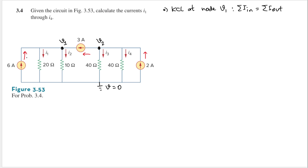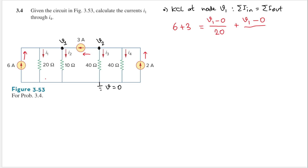There are two currents going in: one is 6 amperes and the other is 3 amperes, so 6 plus 3. All other currents are going out. This current here is (V1 minus 0) divided by the resistance of 20 ohms, and this branch gives us (V1 minus 0) divided by 10 ohms.